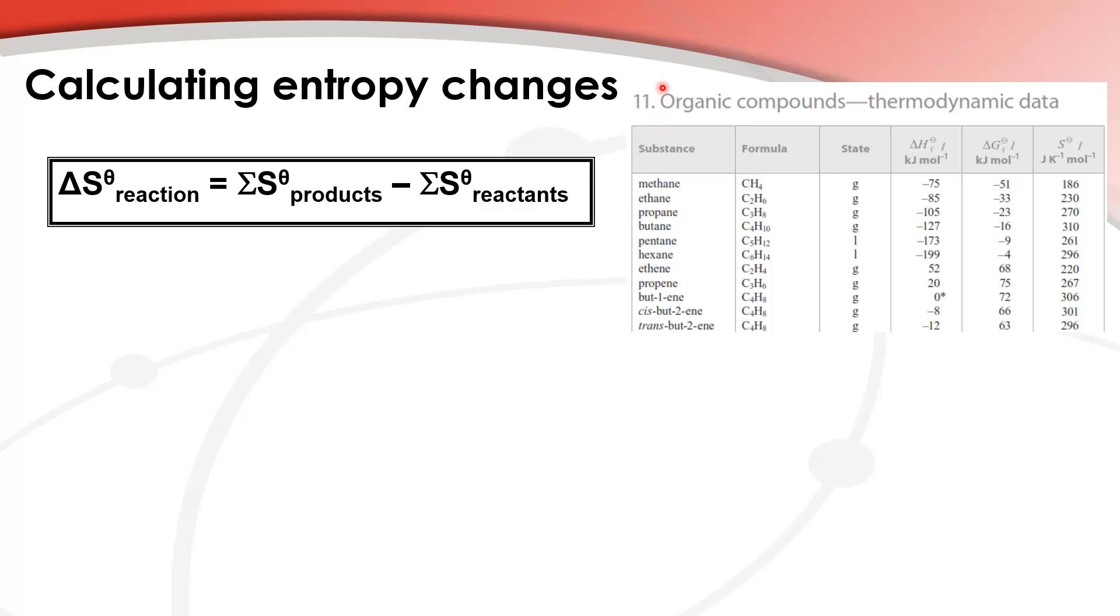In table 11 of the data booklet you can find the absolute entropy values of some substances. As you can see, all the values for absolute entropy are positive values. The reason for this is a perfectly ordered solid at absolute zero has zero entropy. So all other states which are more disordered have positive entropy values.